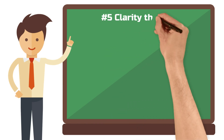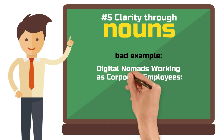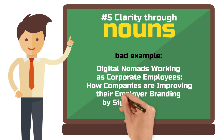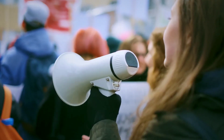Tip 5: Create clarity by using nouns. I have unintentionally used this tip in most of the example titles. To help you understand what I mean, here's a negative example: 'Digital Nomads Working as Corporate Employees: How Companies are Improving Their Employer Branding by Signaling Flexible Work Arrangements.' That title sounds really crappy. But it makes you realize what I mean by using nouns. Instead of using verbs like 'working,' 'improving,' or 'signaling,' limit yourself to nouns. The meaning of both titles is essentially the same, but the verb-heavy version is longer and not very compelling. Nouns — we need nouns.